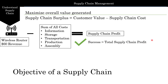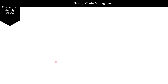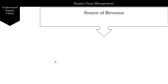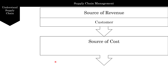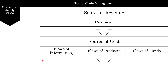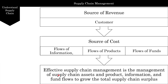If you ended up with a profit across the total supply chain, that's a success. Success is not profit at each individual stage — it's not the profit of one company but the profit of the entire supply chain. The only source of revenue for a supply chain is the customer; everything else is a source of cost, whether it's flows of information, flow of product, or flow of funds. Effective supply chain management manages assets, production, and product information and funds flow to grow the supply chain surplus.